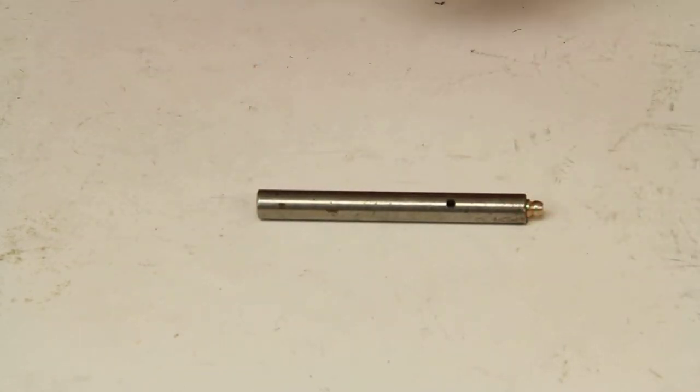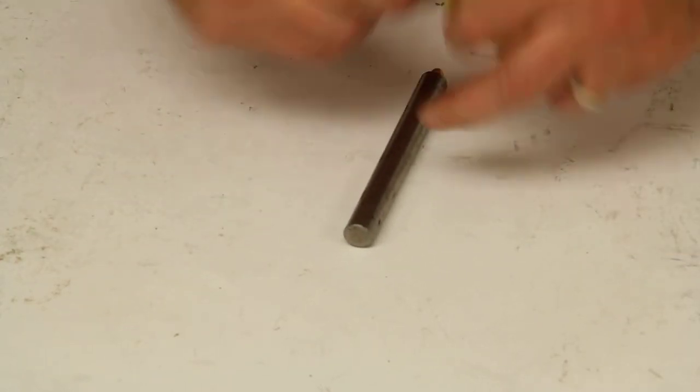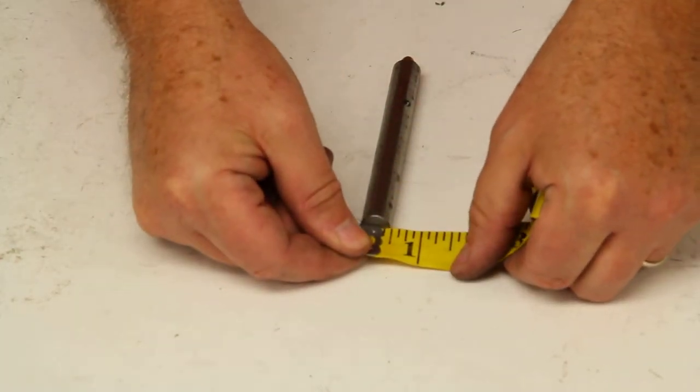I'll give you a few measurements on this. The total length of this pin is 4 1/2 inches. The outer diameter is going to be 1/2 an inch.